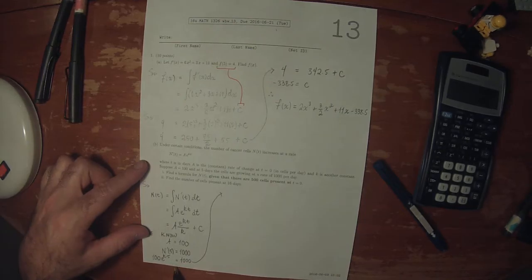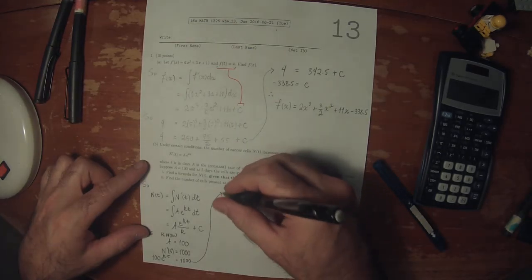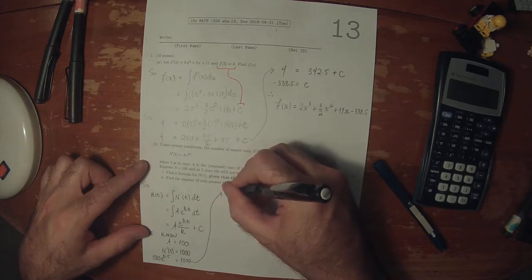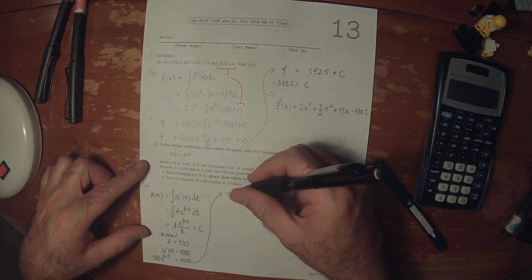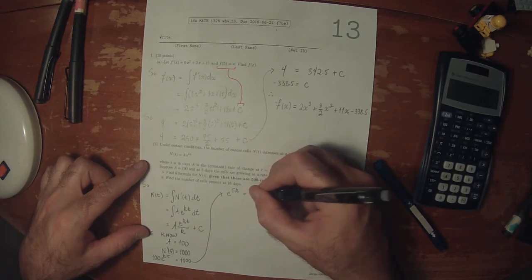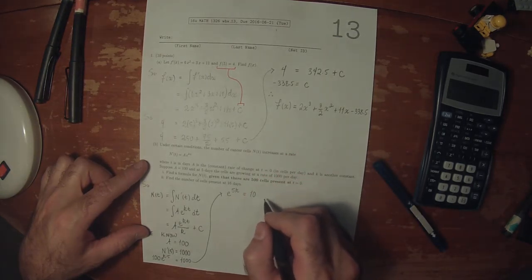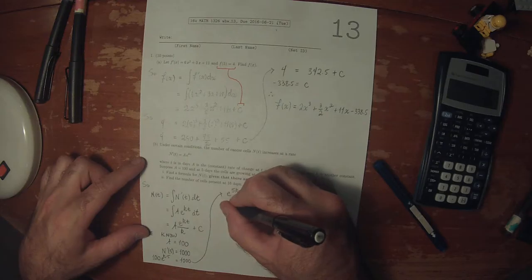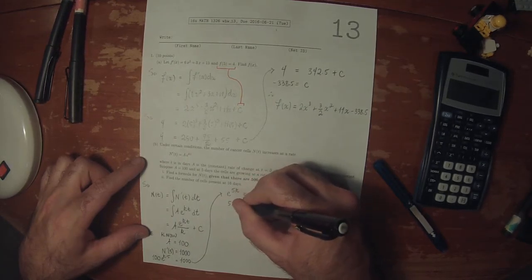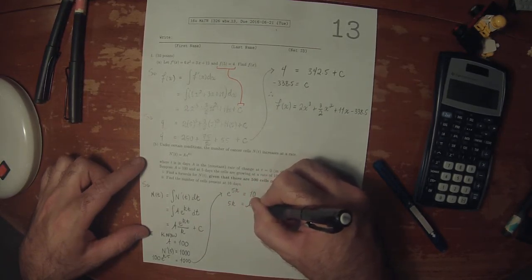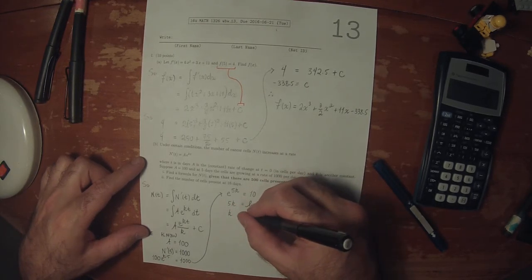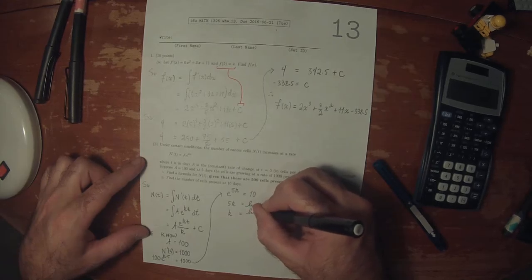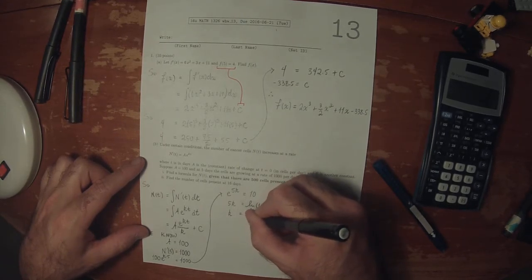And we can solve for k from this. So e to 5k is 10. Then converting this exponential equation to logarithmic equation, that tells us that k is log of 10 divided by 5.